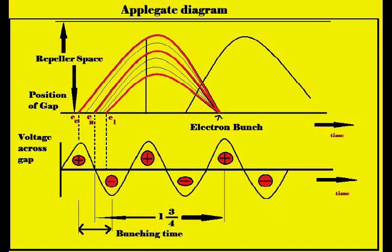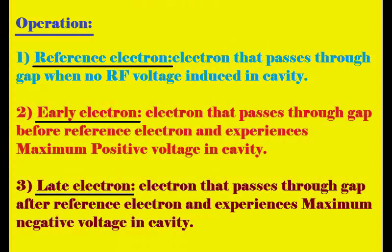The operation of the reflex klystron can be understood from the Applegate diagram. In the Applegate diagram we investigate different cases of electron behavior for different gap voltages. Three electrons are specified: E-E (early electron), E-R (reference electron), and E-L (late electron). The early electron is the electron which travels before the reference electron.